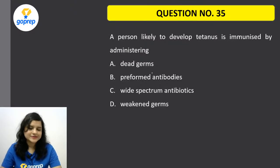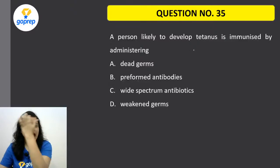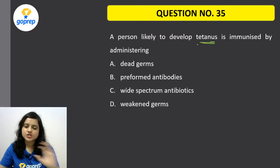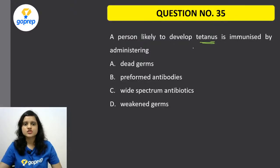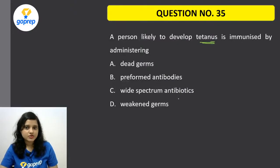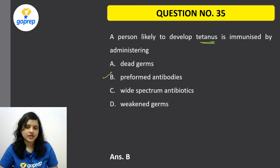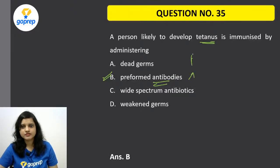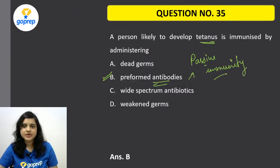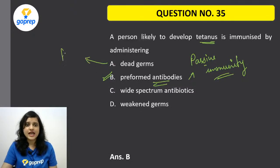Question 35: A person likely to develop tetanus is immunized by administering — dead germs, preformed antibodies, wide spectrum antibodies, or weakened germs? The correct option is B — preformed antibodies. So this is a type of passive immunity. When we inject preformed antibodies into the body, that is passive immunity. If we inject dead germs, that type of immunity is called active immunity.